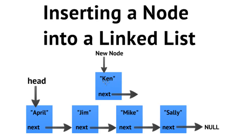We couldn't just use the add-to-head function because that would put Ken at the very beginning. What we need to do is traverse through our linked list and find the location between Jim and Mike to insert our node with the name Ken. We're not going to look at a lot of code implementation — we mainly want to focus on the logical representation and how our pointers should be updated.